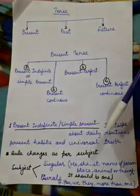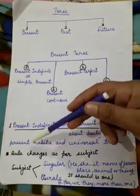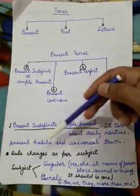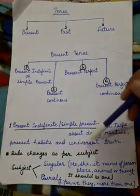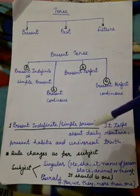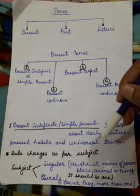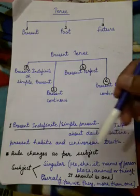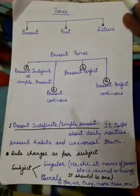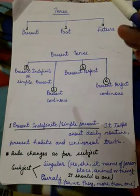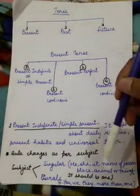Present indefinite refers to what we do in our daily life — for example, I go to school, I eat food, I study. These are present habits. Universal truth is something that is followed equally everywhere — for example, the sun rises in the east and sets in the west. This happens throughout the world, at every corner of the earth.